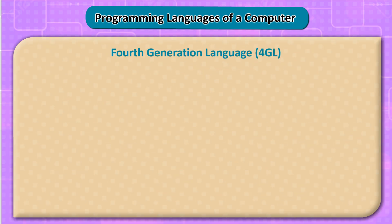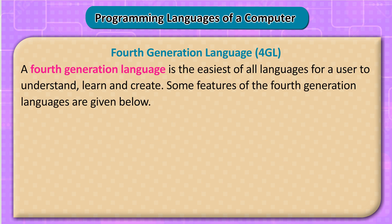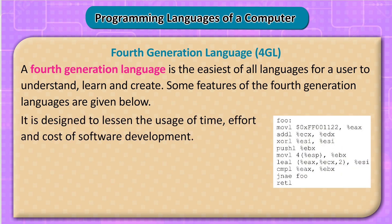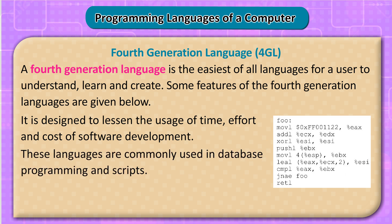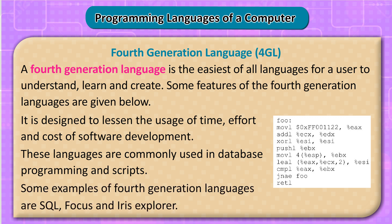Fourth-Generation Language (4GL): A fourth-generation language is the easiest of all languages for a user to understand, learn, and create. It is designed to lessen the usage of time, effort, and cost of software development. These languages are commonly used in database programming and scripts. Examples include SQL, Focus, and Iris Explorer.